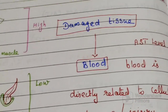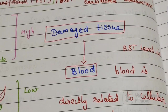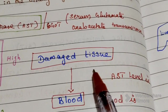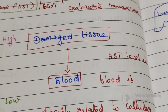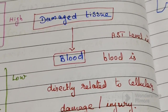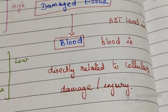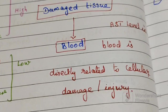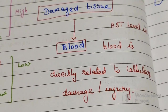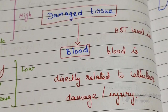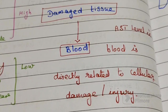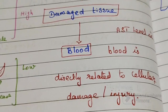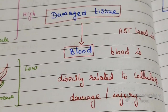Damaged tissue releases AST into the blood. Therefore, AST level in blood is directly related to the extent of cellular damage or injury.